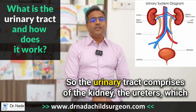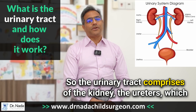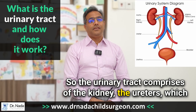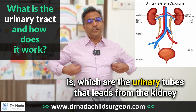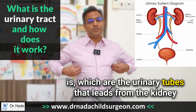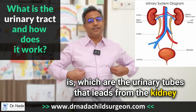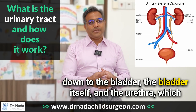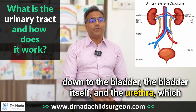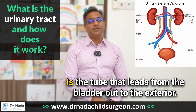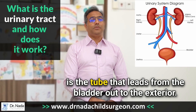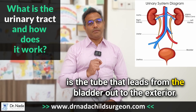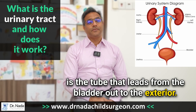The urinary tract comprises of the kidney, the ureters — which are the urinary tubes that lead from the kidney down to the bladder — the bladder itself, and the urethra, which is the tube that leads from the bladder out to the exterior.